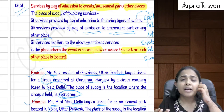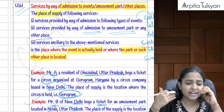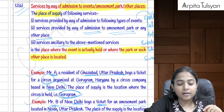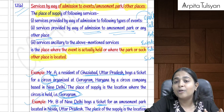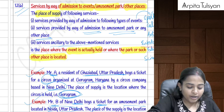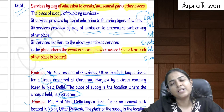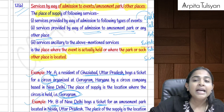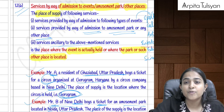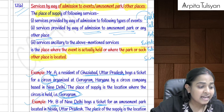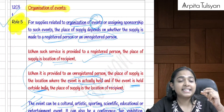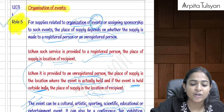Section 12(6) covers admission to events — cultural, sporting, artistic events — or entry to amusement parks, water parks, etc. The place of supply is where the event is held or where the park is situated.